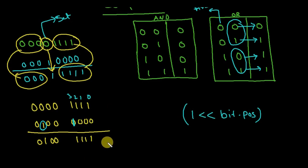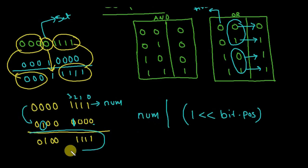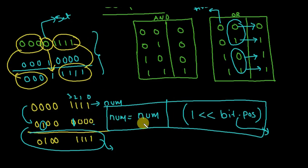After shifting, I store it in a variable and perform a bitwise OR operation with the original number. So the expression is: number = number | (1 << bit_position). The bit position is in our hands — we can define whatever position we want — and the one will be placed at that bit after the operation.